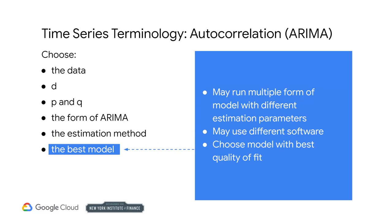The sixth decision is mostly science. You may have run multiple forms of the model with different estimation methods and even different software. In the end, each model gives you a quality score — we discussed these in a previous section. You simply choose the model with the optimal value. Recall that you may have more than one way to evaluate the quality of fit. In cases where one metric favors one model and a different metric favors a different model, then you have discretion.